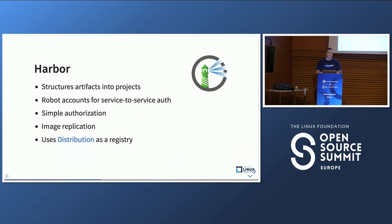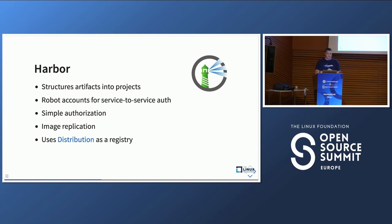Harbor ticked off a lot of boxes. Harbor structures container images into projects, which makes authorization easier — products can get their own projects, and even with multiple image repositories, you can grant access to specific projects. Harbor also has robot accounts, where you can create special credentials for service-to-service authentication, so you no longer need cloud provider IAM. And it comes with image replication, which was really useful because we didn't have to change our CI processes — we just replicated images from our existing registries into Harbor. Interestingly, Harbor actually uses the distribution project under the hood, which falls into the plain old registries category.